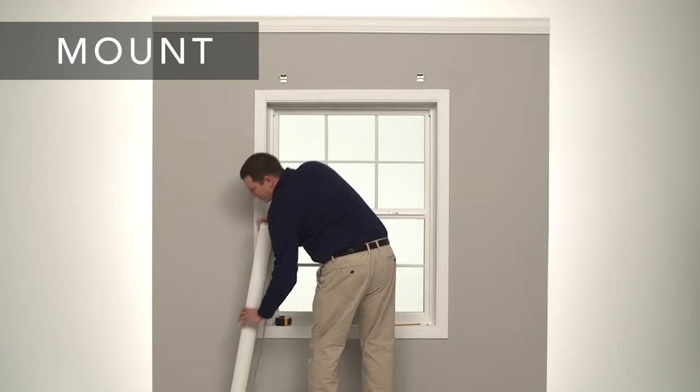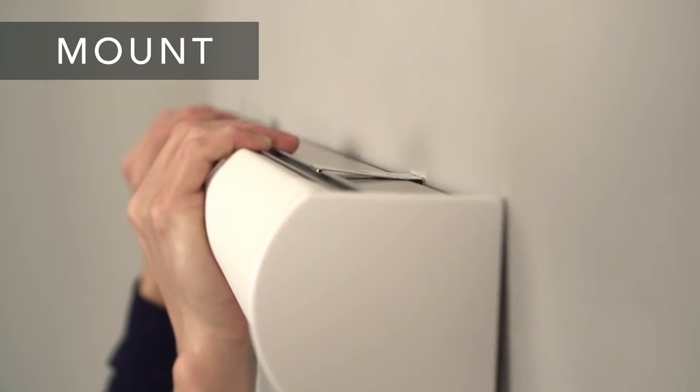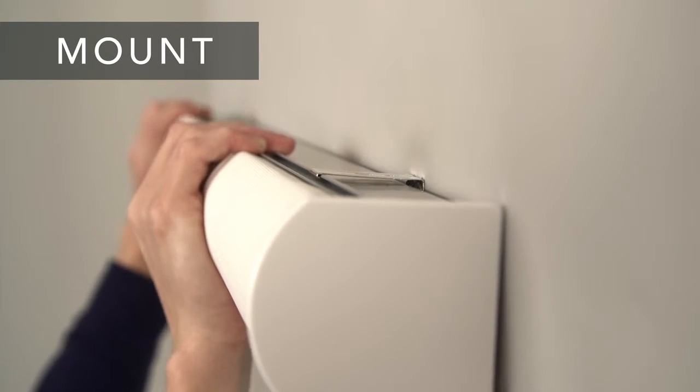Now you're ready to mount your shade. Place the front groove of the shade back bar in the bracket lip and rotate it up until it snaps into place.